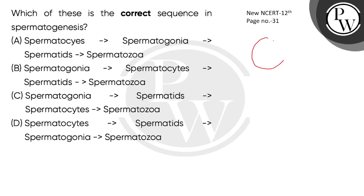In those seminiferous tubules, sperm formation takes place. The seminiferous tubules are lined with two types of cells: male germ cells, and pyramidal-shaped Sertoli cells.